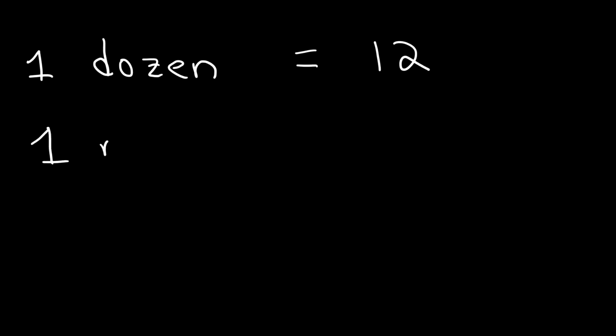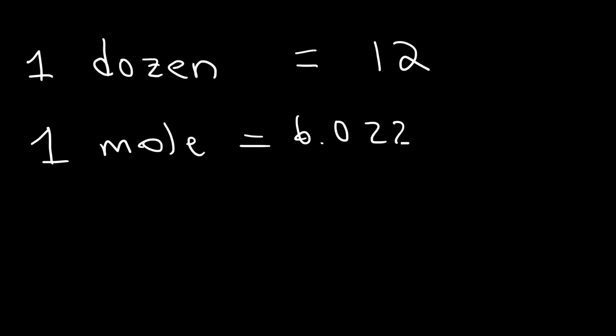A mole is very similar to a dozen in that a mole is also a quantity — it represents a number. The only difference is it represents a very, very, very large number: 6.022 times 10 to the 23. That's what it represents. So if I have a mole of books, I have 6 times 10 to the 23 books, which is probably not practical — that's too many books to have.